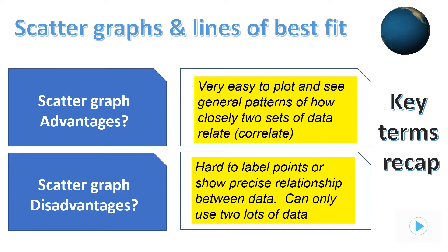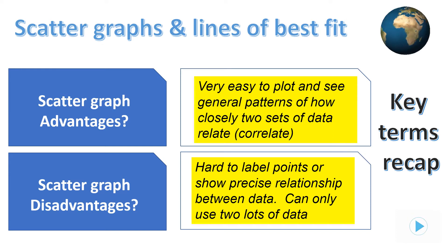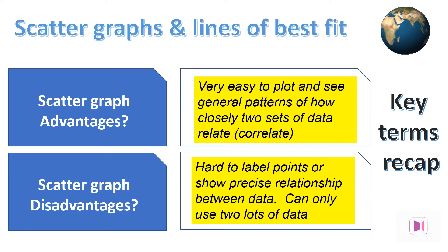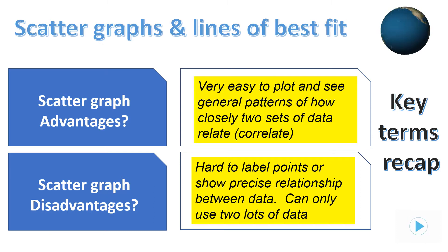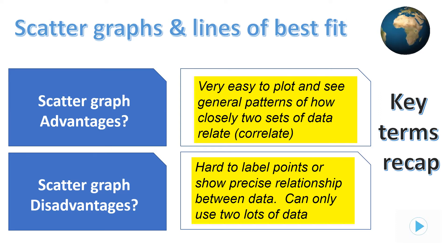These graphs are easy to plot and we can see general patterns between the two sets of data and the strength of correlation. It's also easy to spot outlier data, or anomalies as they're sometimes known. However, disadvantages are that you can only use them for two sets of data.